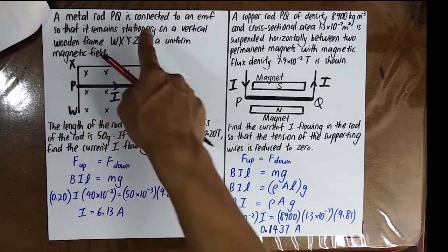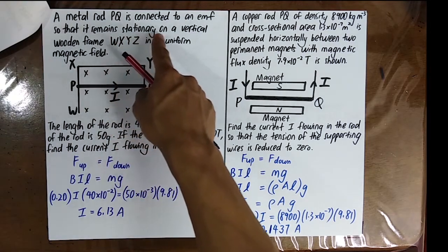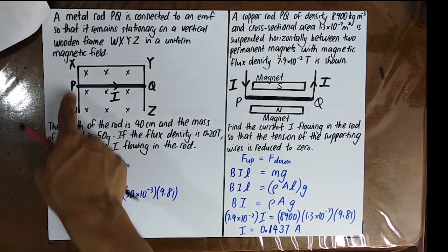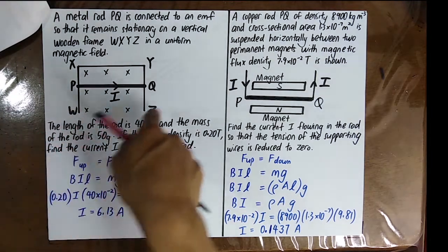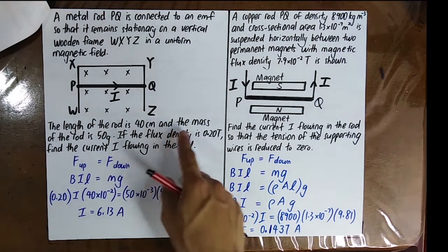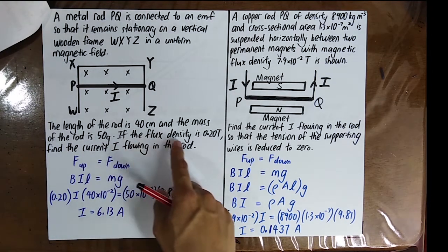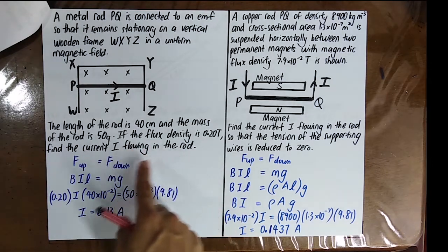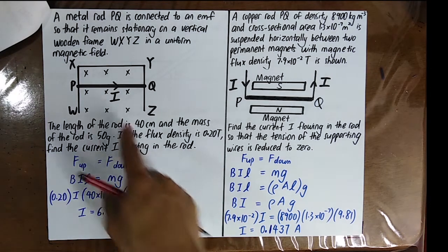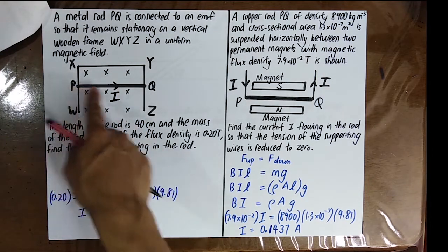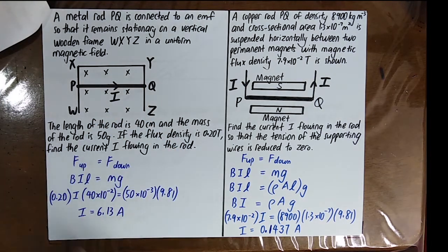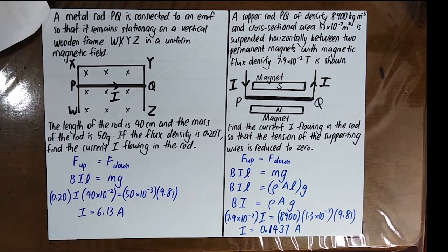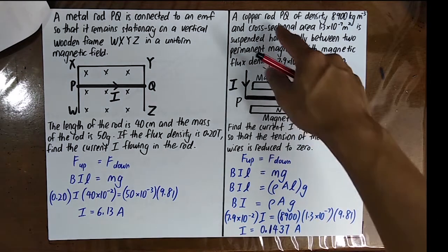Example: A metal rod PQ is connected to an EMF so it remains stationary on a vertical wooden frame in a uniform magnetic field directed into the page. The rod length is 40 cm and mass is 50 g, with flux density 0.2 T. For the rod to be stationary, there must be no resultant force, so the magnetic force must equal the gravitational force. From this condition, you can solve for the current I.